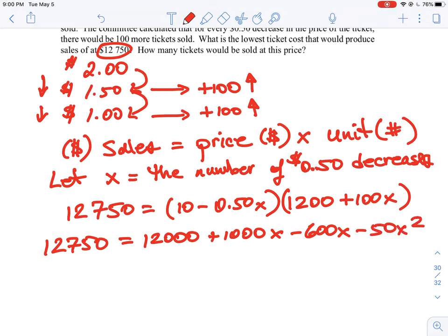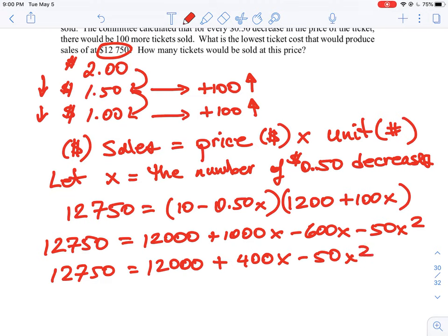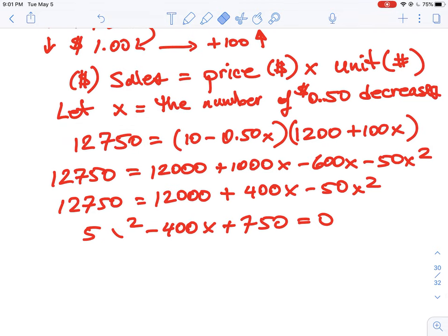Expanding that out: 10 times 1200 is 12,000; 10 times 100x is +1000x; 0.5 times 1200 is −600x; and 0.5 times 100x is −50x. Combining like terms gives +400x − 50x, which is +400x. Rearranging to equal zero: we move everything over, subtracting 12,750, giving us −50x² + 400x + 750 = 0, or in a cleaner form ready to factor.